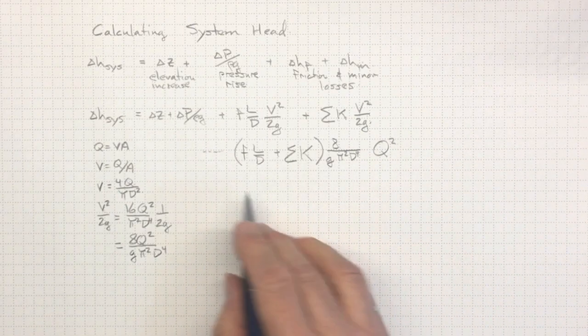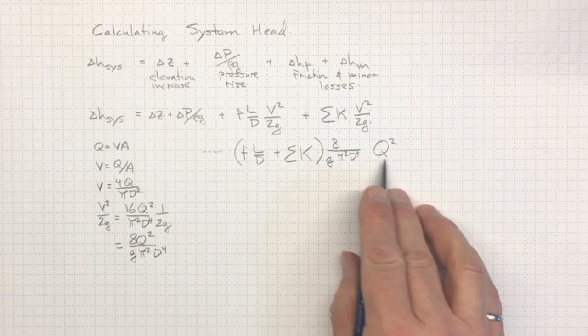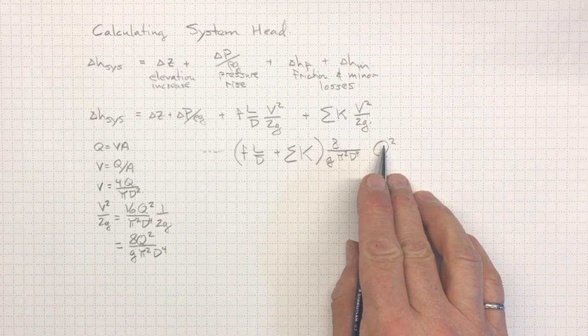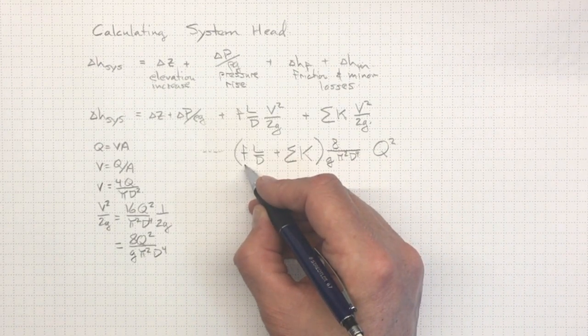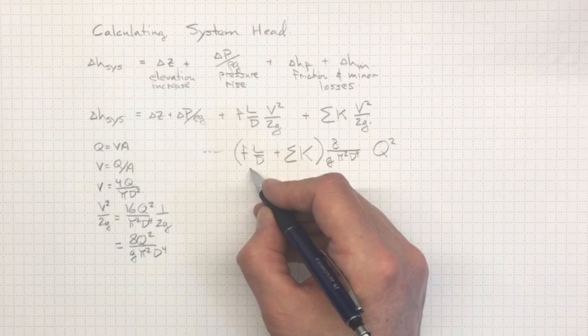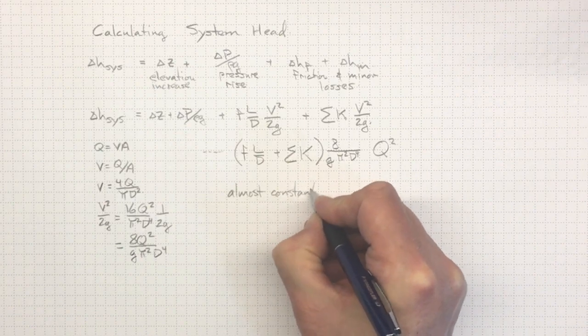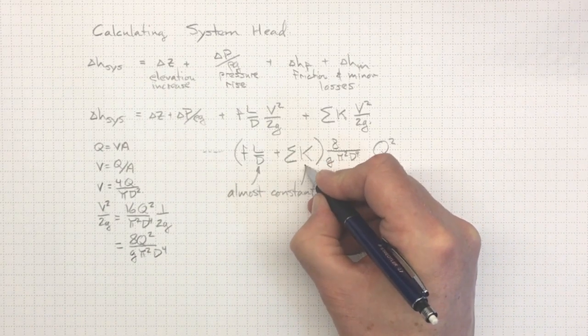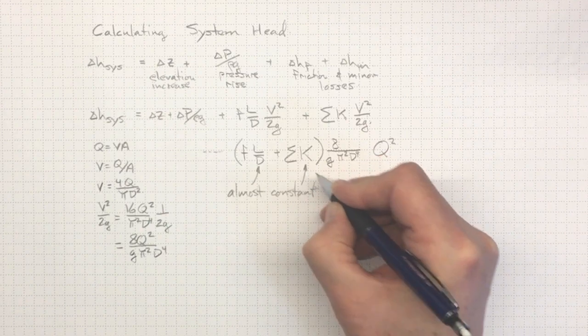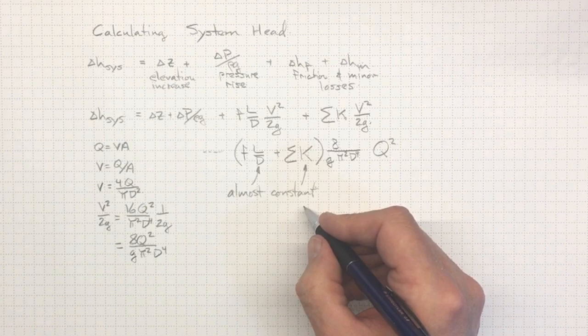Now let's think about how we might go about calculating this portion for varying flow rates. Now, friction factor, it's a weak function of the flow rate. It's a function of Reynolds number and relative roughness, but it's almost constant.